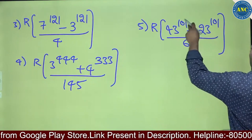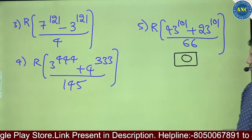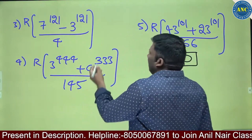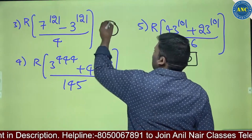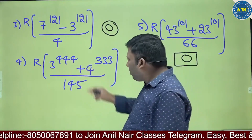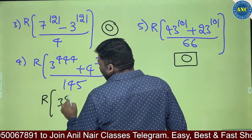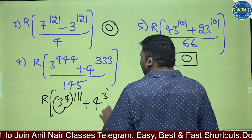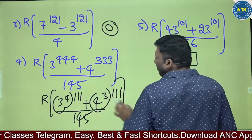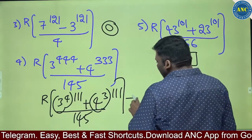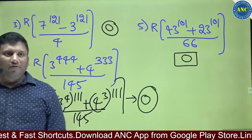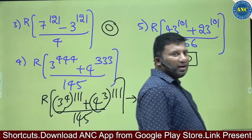A power N plus B power N divided by A plus B — answer is 0 remainder. Similarly for A power N minus B power N divided by A minus B — answer is also 0. For 3 power 444 plus 4 power 333: rewrite as (3 power 4) power 111 plus (4 power 3) power 111, which is 81 plus 64 equals 145, divided by 145 — answer is 0. This is a very easy question.